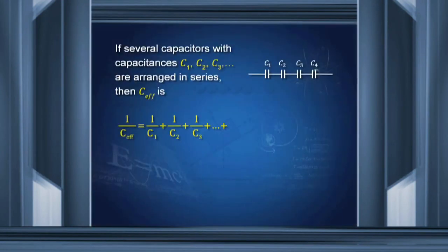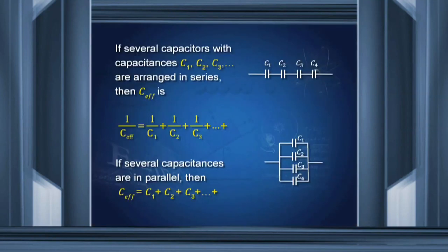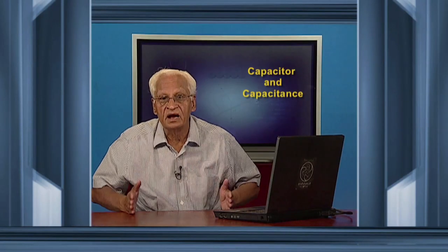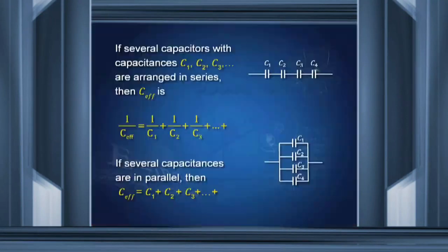If several capacitors with capacitances C1, C2, C3 are arranged in series, the effective capacitance is given by the reciprocal of the sum: 1 over C-eff equals 1 over C1 plus 1 over C2 plus 1 over C3. If they are in parallel, the effective capacitance is C1 plus C2 plus C3 — the capacitances simply add up. In parallel arrangement the capacity increases; in series arrangement the capacity is reduced.